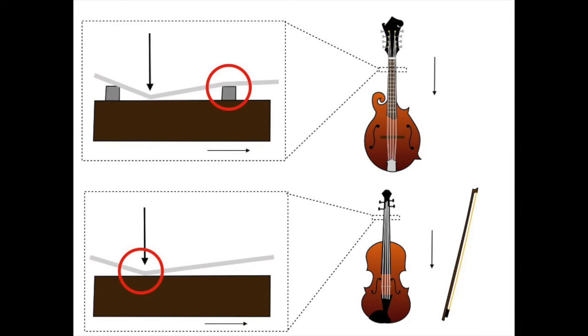In short, millimeters matter on a fretless violin. They don't on a fretted mandolin. Being slightly off in your finger placement on the violin can sound really awful. Hence it's a hard instrument to be good at. Side note, the accuracy of your finger placement and therefore your pitch is called intonation.